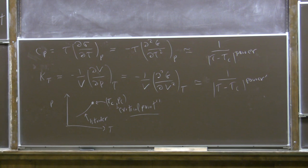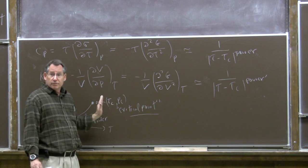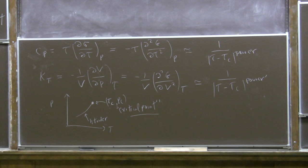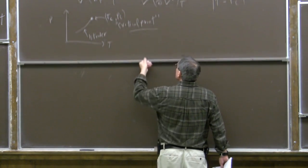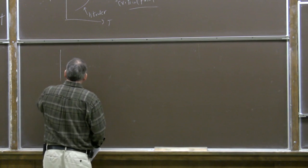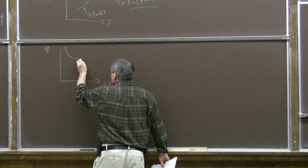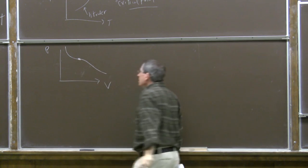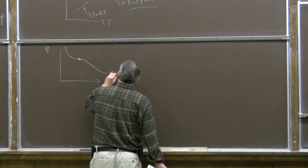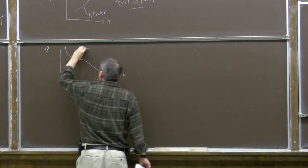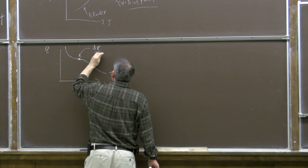Let's try to understand the critical point in the Van der Waals model, approaching the critical temperature from above. When the temperature is above the critical temperature, isotherms are monotonic. At the critical temperature, the isotherm makes a transition to one which is no longer monotonic. There's a critical isotherm where pressure as a function of volume has a point of inflection—dP/dV goes to zero at that point. This is the critical point where dP/dV equals zero.